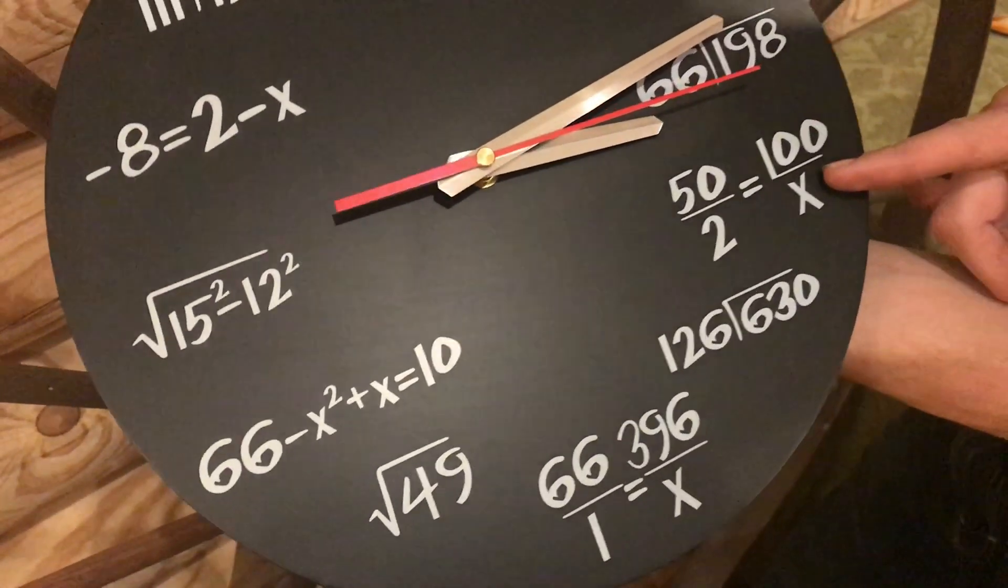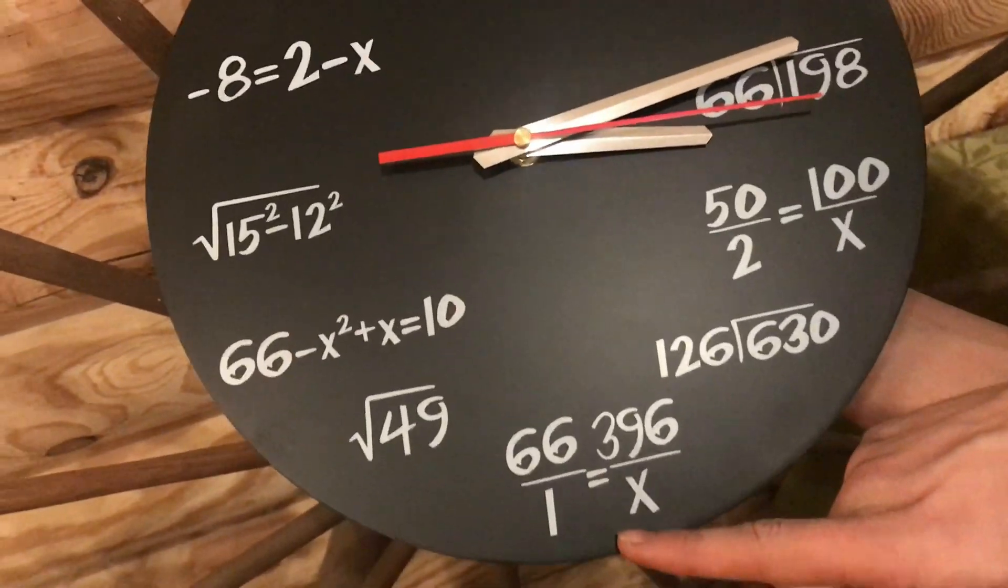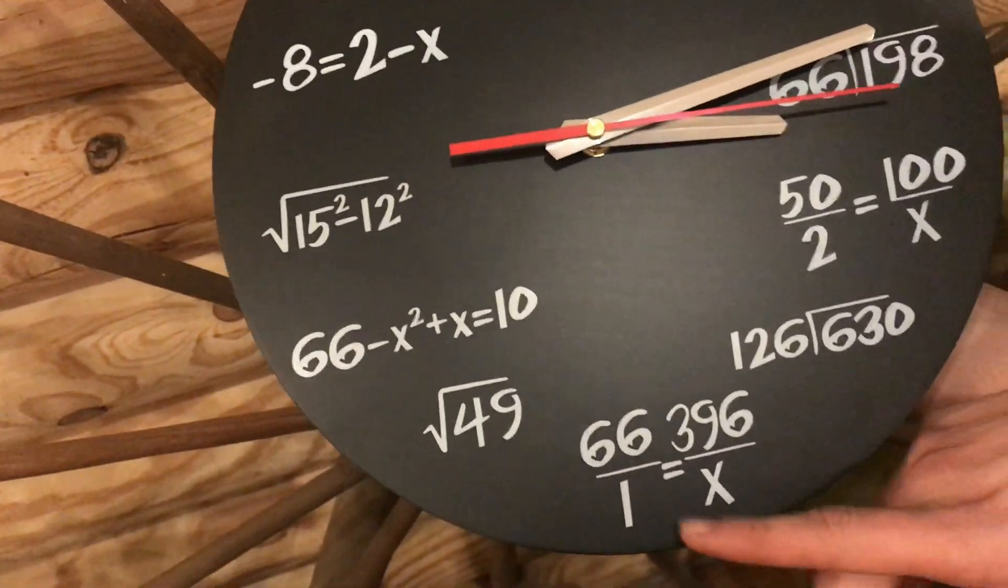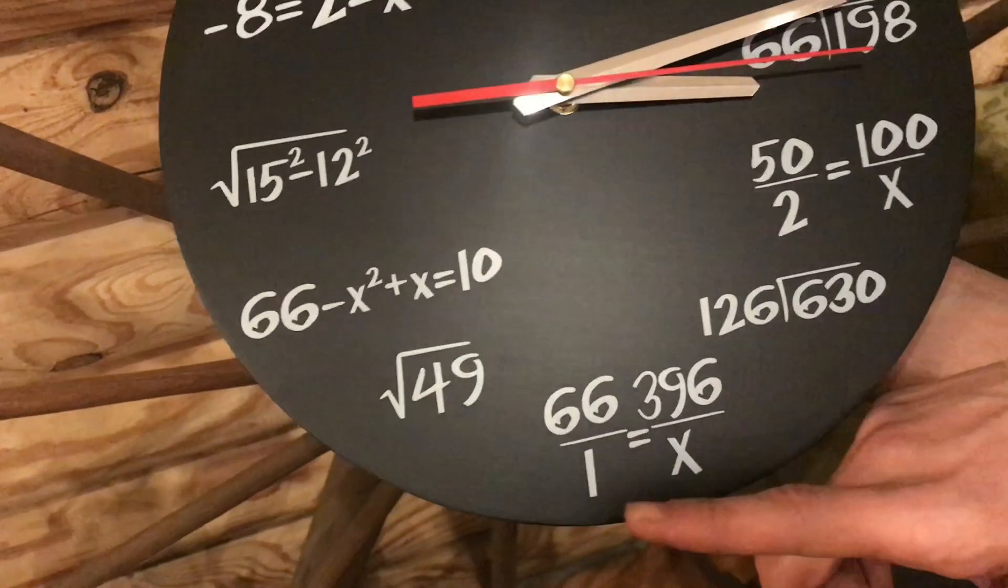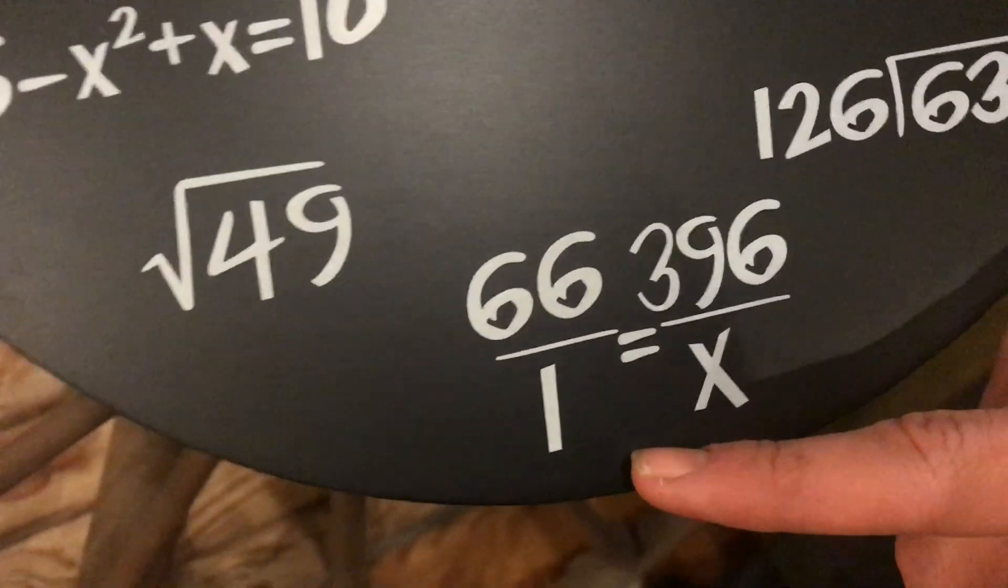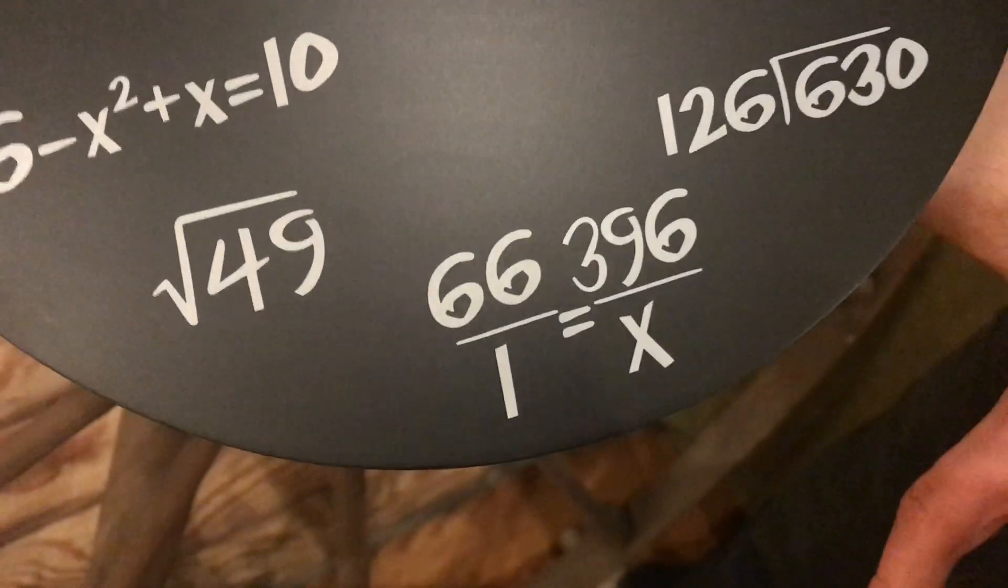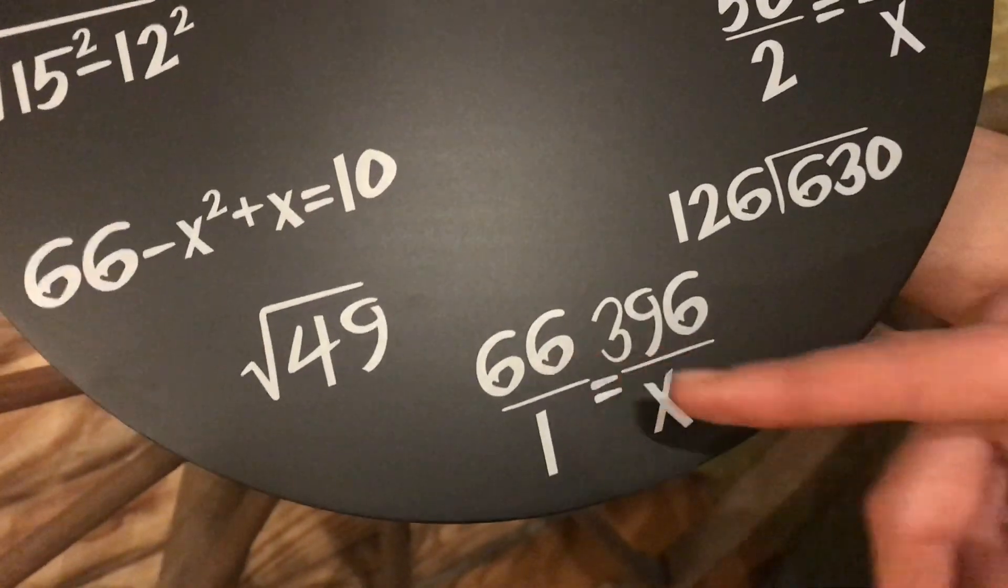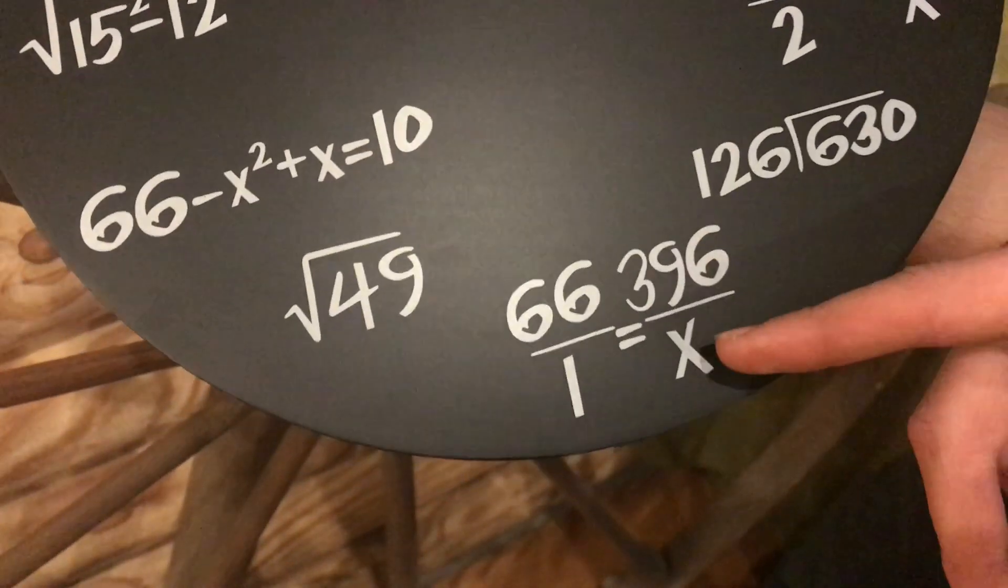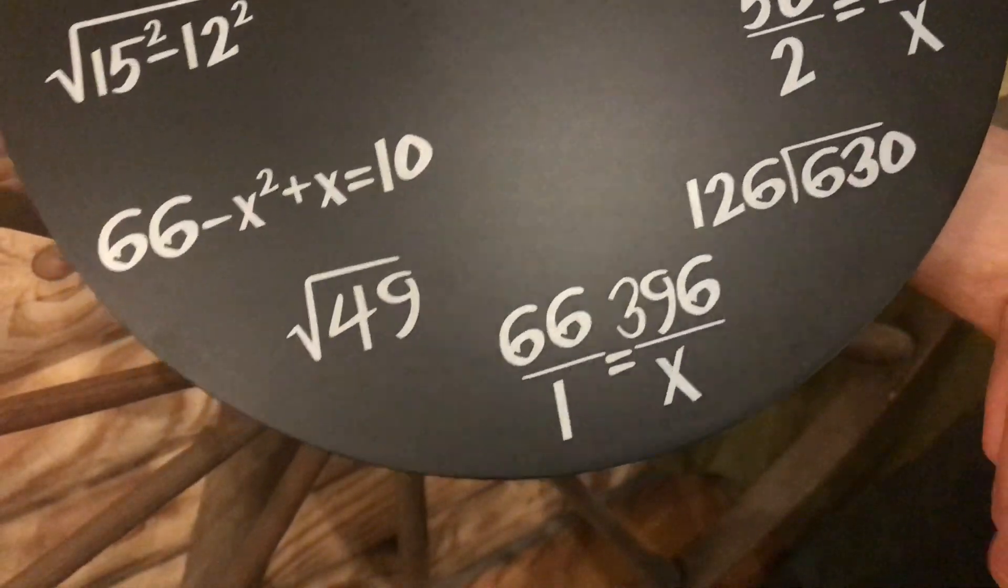This one's similar to the 4. It's again a proportion problem, although this one actually is 66 divided by 1. It seems kind of redundant because any time you're dividing by 1, it doesn't do anything. Anyway, you would technically do a proportion cross product to solve that.